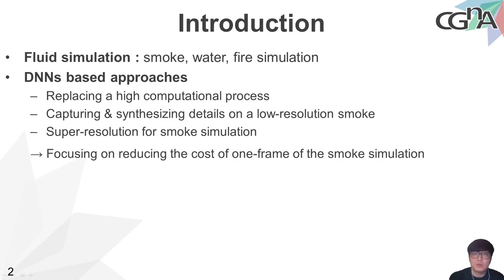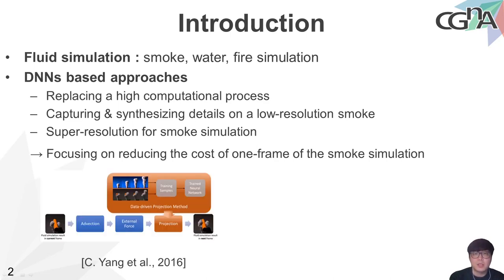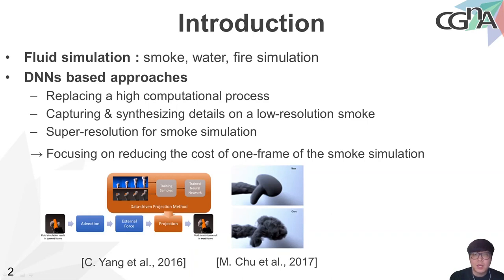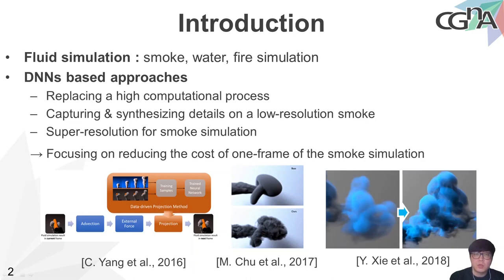Fluid simulation, which aims to compute the motion of smoke, water, and fire, has seen many studies proposed to reduce the high computational cost and increase accuracy. Recently, efficient flow simulation methods using deep neural networks have been proposed — for example, a method that replaces a high-cost computational process with a DNN model, a CNN-based method to synthesize details of smoke on a low-resolution smoke, and a super-resolution method for smoke simulation. However, all of these methods have focused on reducing the cost of one-frame computation.